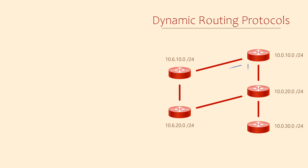What happens when a router learns the same route from two different places? In this example, a router is learning the 10.0.10.0 network from two different neighbours. In a case like this, the routing protocol selects the best path to the destination, and that path goes into the routing table.